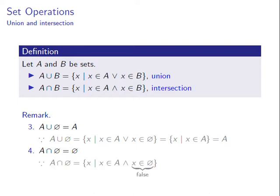Any set A intersection the null set is null. This is because A intersection the null set consists of all objects x such that both x is in A and x is in the null set. Since the statement x is in the null set is false, the statement both x is in A and x is in the null set is always false, so this is equivalent to the statement x is in the null set, which gives the null set.